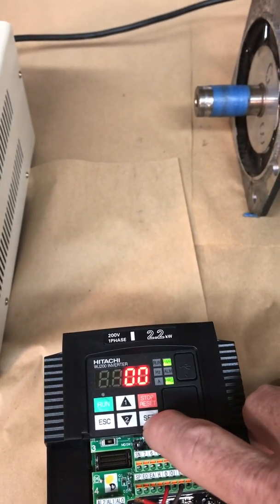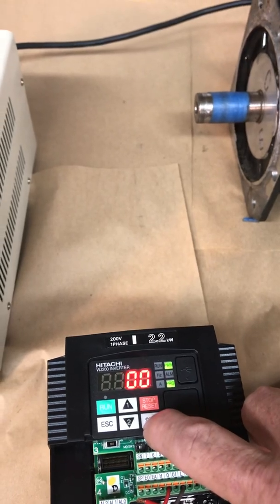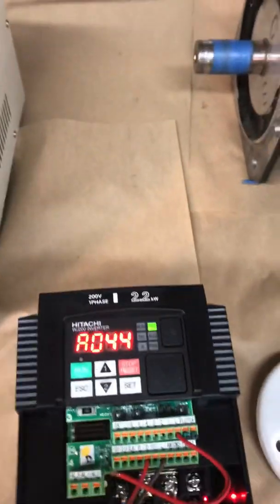Zero three on the Hitachi WJ200 is the sensorless vector. We go to zero, that's the factory default setting which is constant torque. We'll hit set, that's entered.